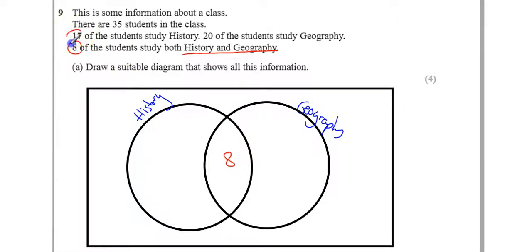And then we look. We've got 17 that study history only. So, inside this circle, we've got to have 17. But we already have 8. So, if we're just looking at the left-hand circle here, we've got to have 17, take off 8. That means we've got 9 left over.